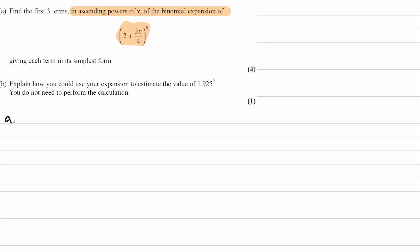2 plus 3x over 4 to the power of 6 is equal to 6 choose 0 times 2 to the power of 6 times 3x over 4 to the power of 0. We're after ascending powers of x, so I've started with x being to the power of 0, the 2 being to the power of 6.